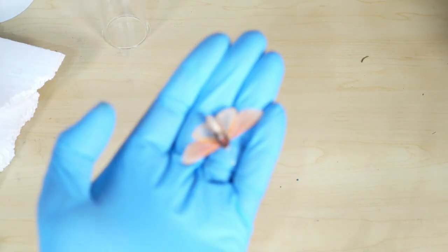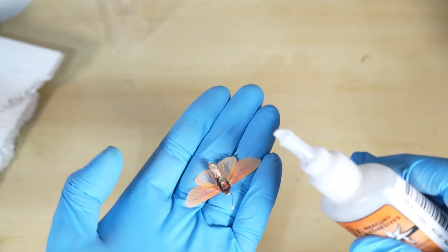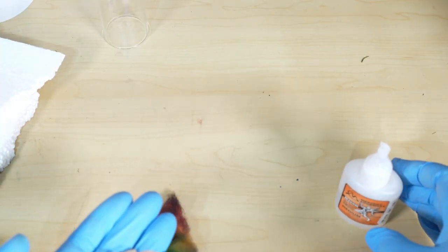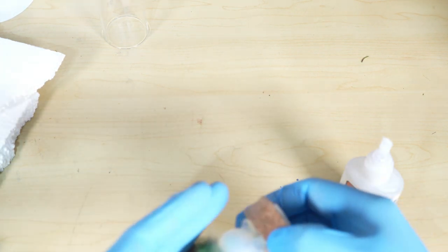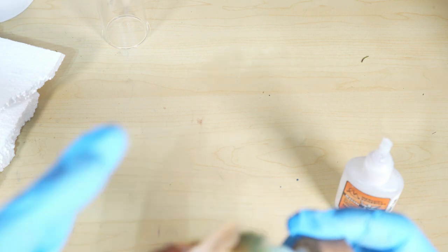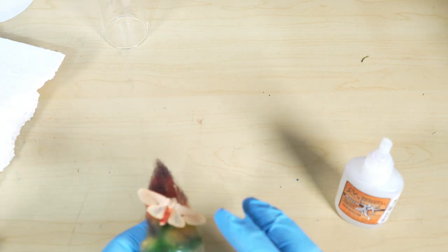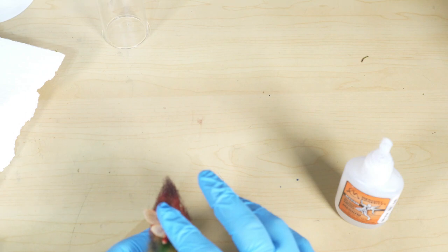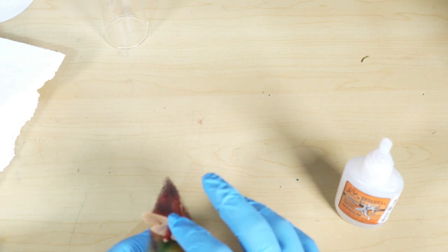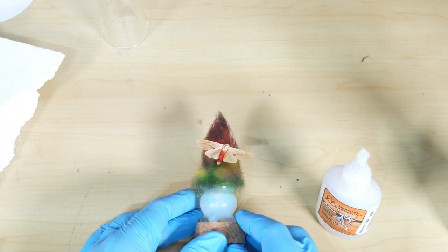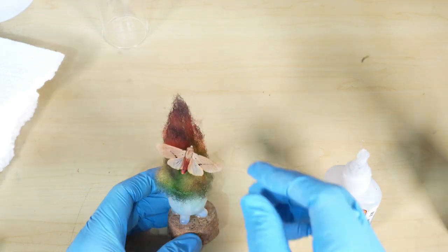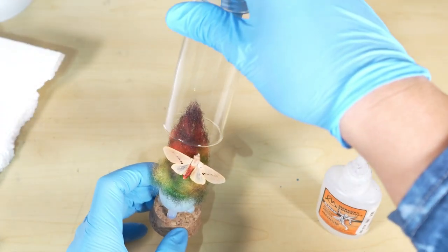Once I was happy with that, get this in focus, added some glue and put him right in the center of that stuffing. I made sure he was fully secured, and that's all it is. It's a really easy and quick project. Hopefully you guys like it.